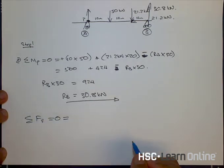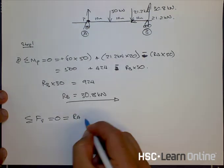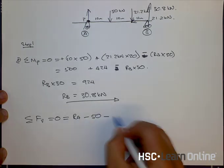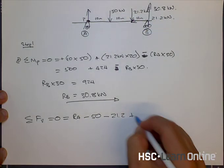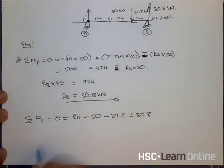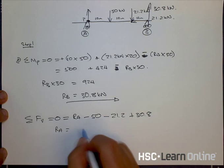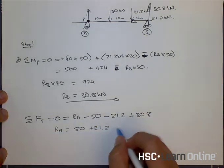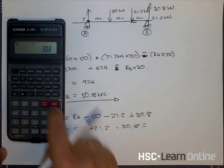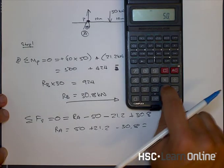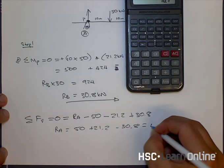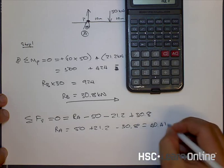And if I add these all up, it's RA minus 50, because 50 is down, minus 21.2, because that's down, plus 30.8, because that's up, equals zero. So RA is equal to 50, plus 21.2, minus 30.8. And let's just quickly do that on our calculator. 50 plus 21.2 minus 30.8 is 40.4 kilonewtons.